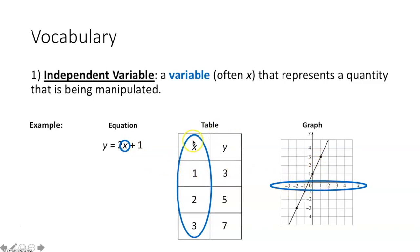In a table, the left column is usually going to be your independent variable, whereas the right column is usually going to be your dependent variable. In a graph, the independent variable is usually your x-axis.